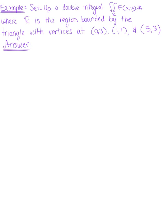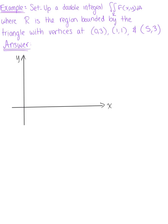The first thing we want to do is sketch a graph of this region. We set up our y-axis and x-axis, then plot the ordered pairs: a point at (0,3), a vertex at (1,1), and a vertex at (5,3). By connecting these vertices, we see our region of integration — the triangle. We shade our region of integration here; this is R.